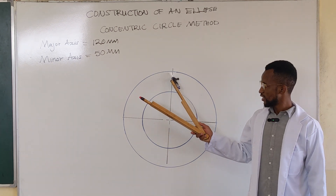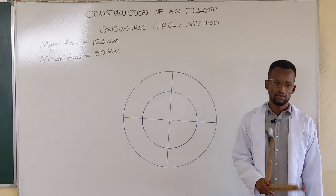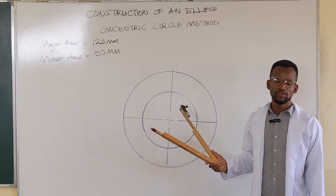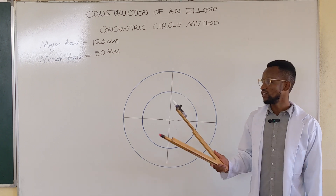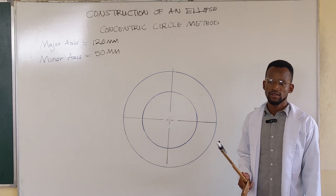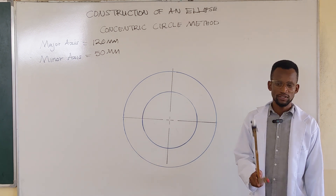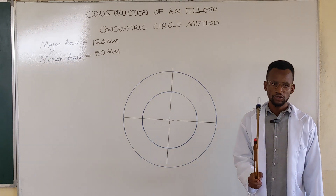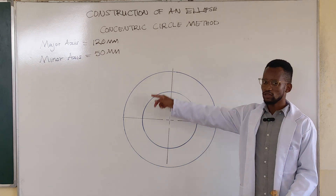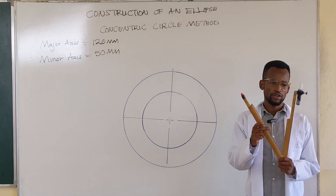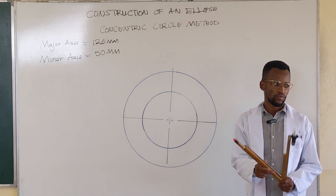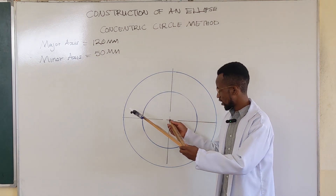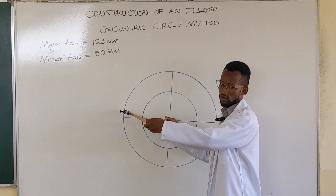When we divide this circle — since these are concentric circles coming from the same center — when we divide one circle, it means we've divided the other circle as well, because the divisions are just angles. To divide a circle into 12 equal parts, you open your compass to the radius of that circle. We're doing our divisions on the bigger circle, so we need to open to the radius of the bigger circle.